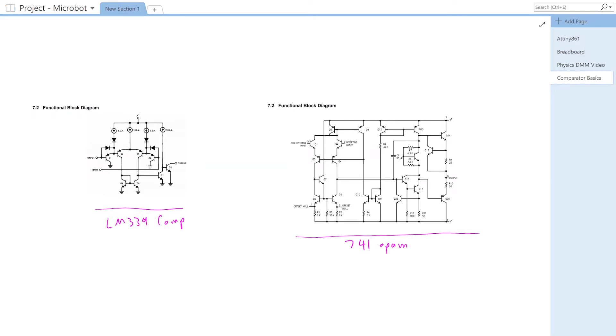You can see the comparator is significantly simpler. It's basically a component built for one purpose - just comparing two input voltages. It's essentially a differential amplifier, whereas the op amp, the 741 op amp, which is your jelly bean op amp that everybody learns on, can be configured to do multiple things.